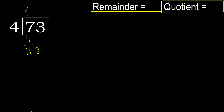33. 4 multiplied by 9 is 36. 4 multiplied by 8 is 32. 33 minus 32 is 1.